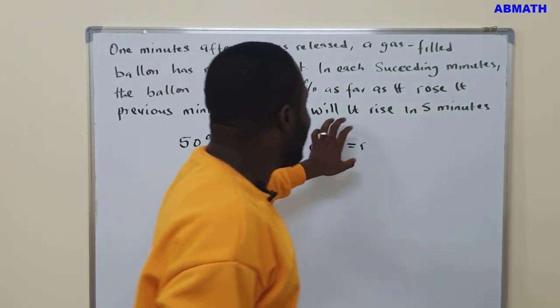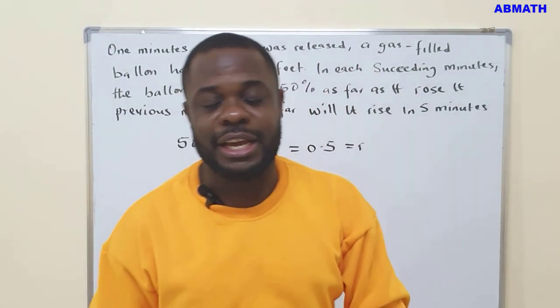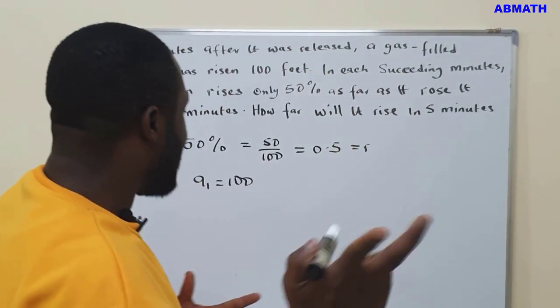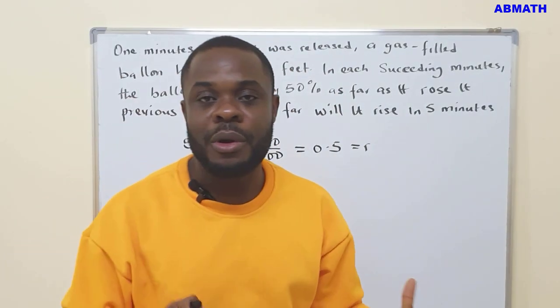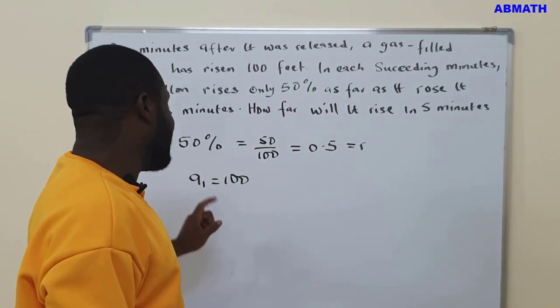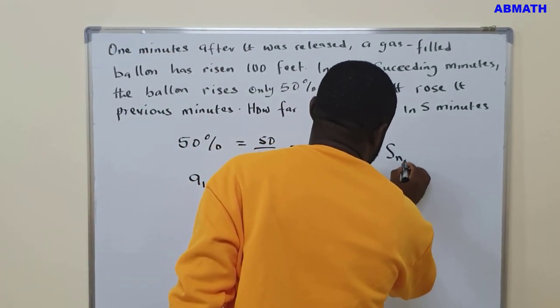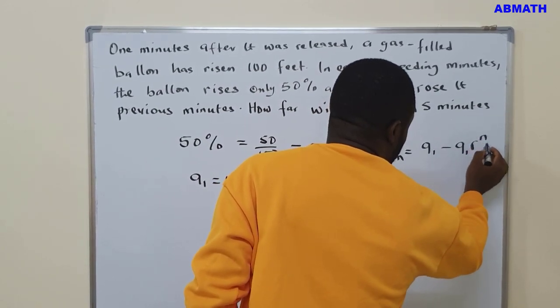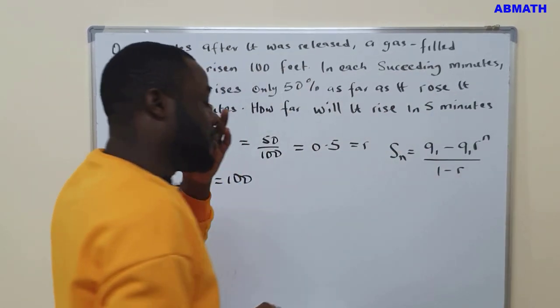They now say, how far will it rise in five minutes? So what we are going to apply here is what we call the partial sum of a geometric sequence. We have two formulas, but if you check my previous video, you will see where I explain the difference. But here, we have common ratio and only the first term. So we are going to use Sn equals first term minus first term multiplied by common ratio to the power N, then divide by 1 minus common ratio.